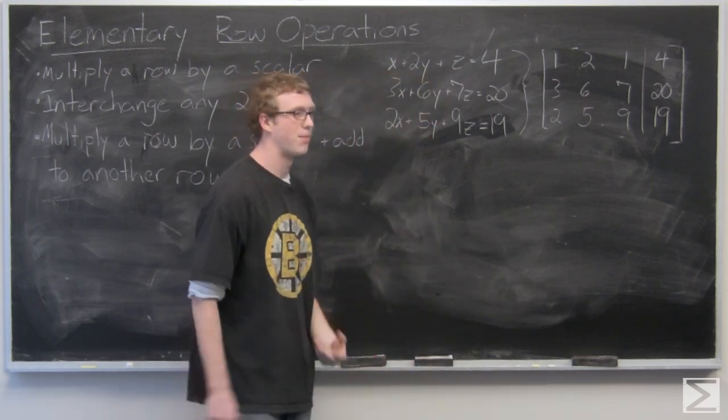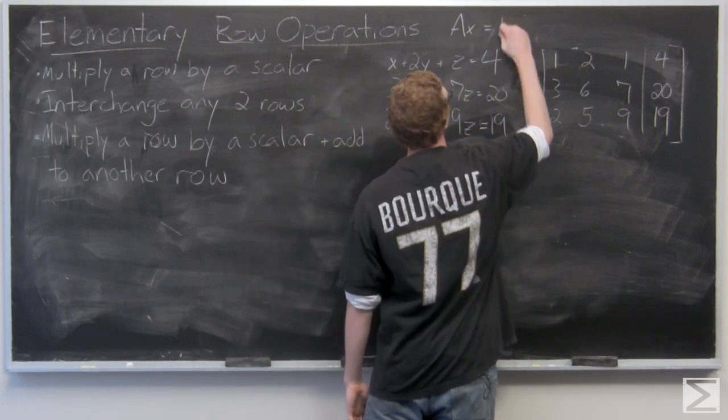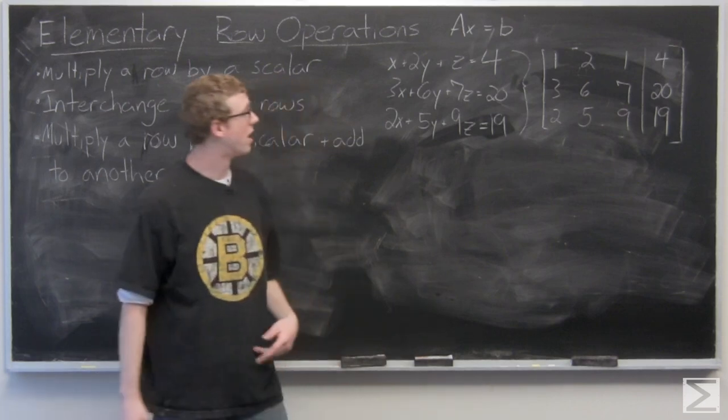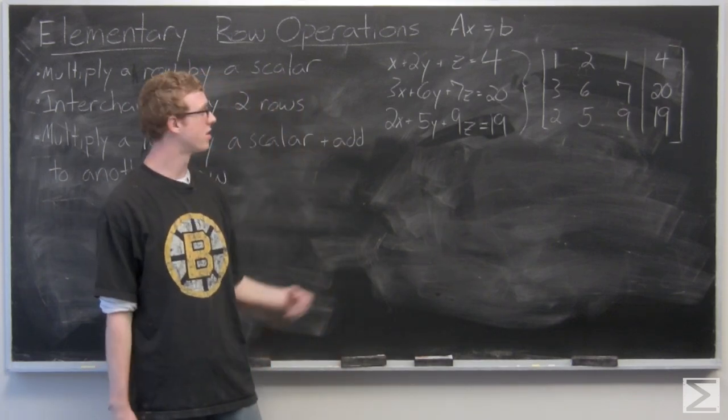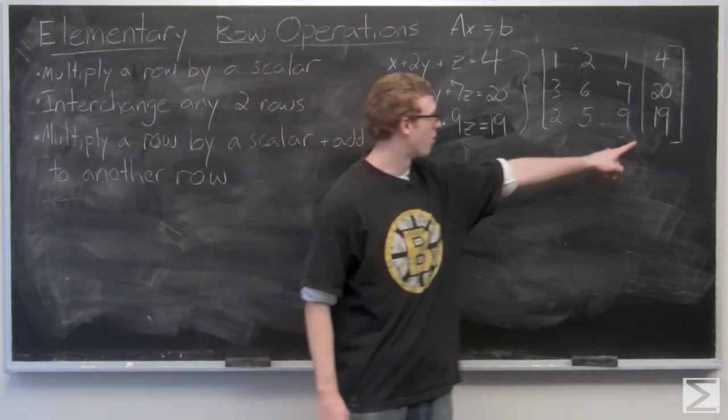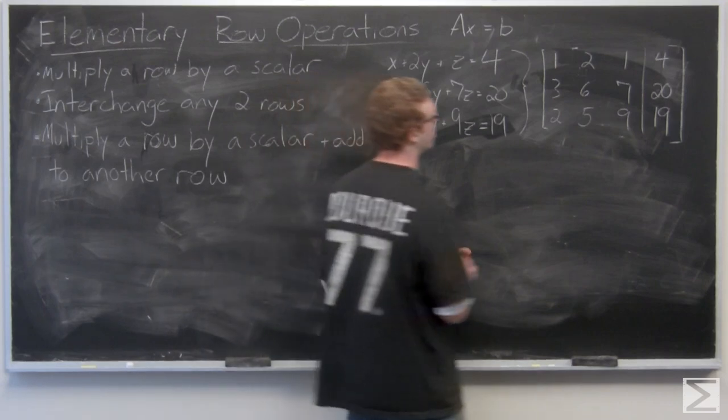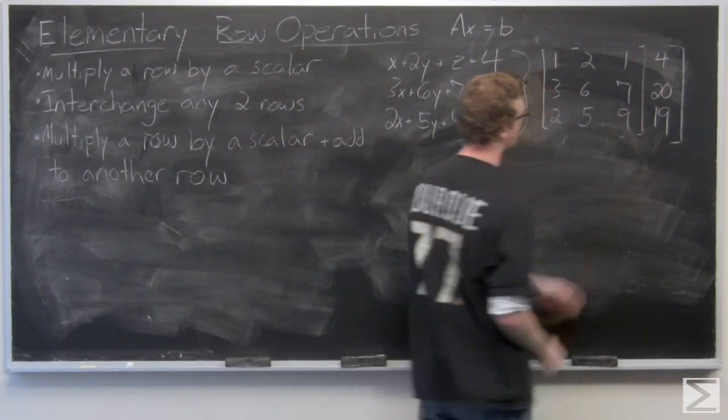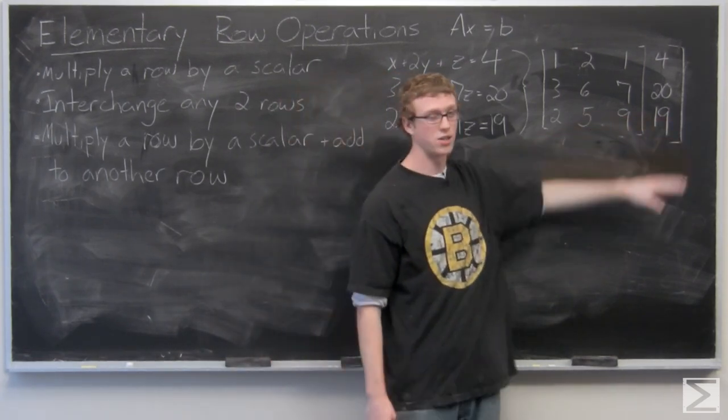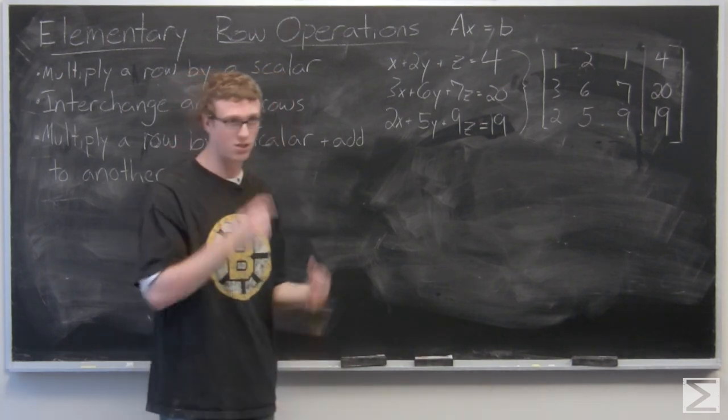Basically what that means is we have the system ax equals b, where a would be this matrix that's all the coefficients of the system and then x is the vector x, y, z, which this line is taking the place of. It would be this matrix times the matrix x, y, z equals another matrix on the right side of the equation 4, 20, 19. But we can just write an augmented coefficient matrix and then solve from there.